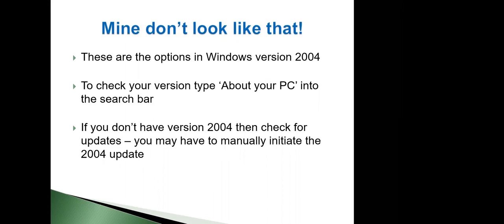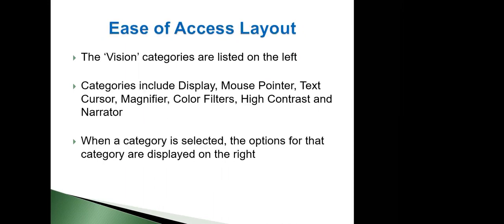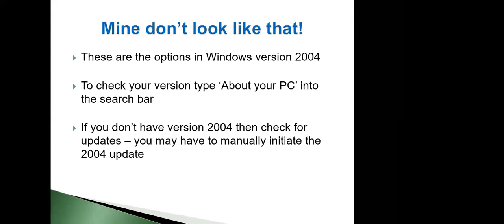Now, if you don't see all of the categories — display, mouse pointer, text cursor, magnifier, color filters, high contrast, and narrator — then it might be that you aren't actually updated to Windows version 2004. Windows 10 has its own versions because they are continuously updating it. In the latest update, we got some additional accessibility features which are very worth having. So if you don't see all of the categories as listed, you might want to check the version of Windows 10 that you're currently running. To do that, you could open up the search bar with the Windows key and type in 'About your PC.'